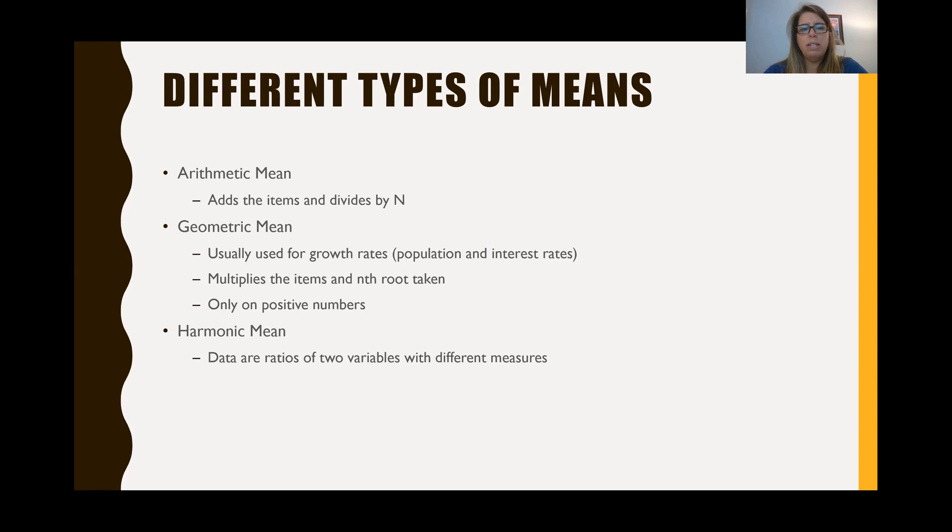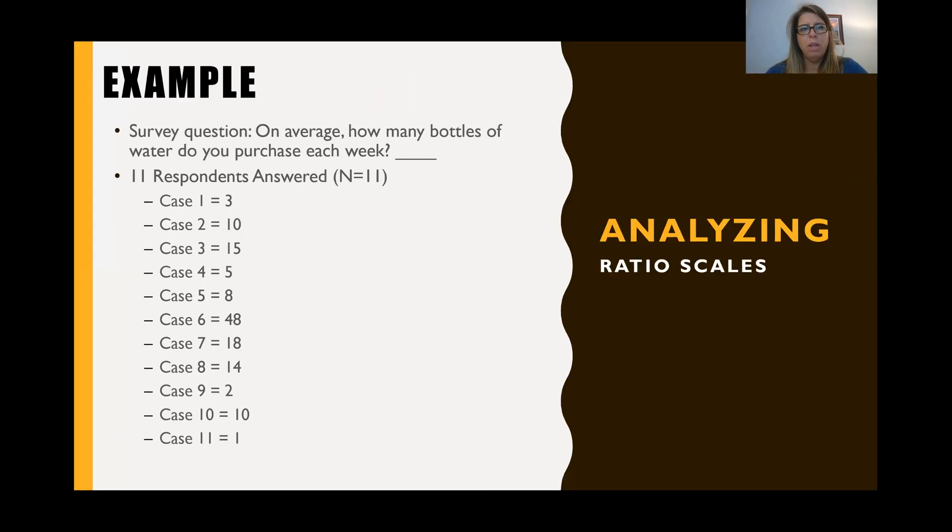You can also take the harmonic mean, which this is when the data are ratios of two different variables that have different measures. And so you can get the mean doing that as well. So we can use means and it's a little more advanced and you can do more things with ratio data than you can with interval. And you can do more with interval than you can with ordinal. And you can do more with ordinal than you can with nominal.